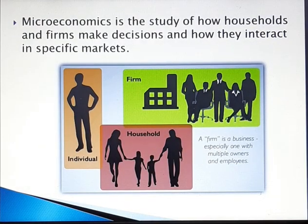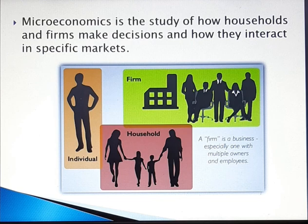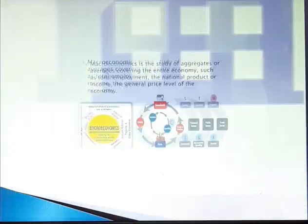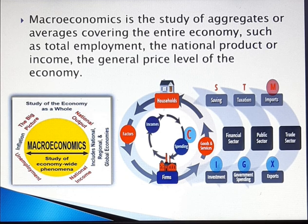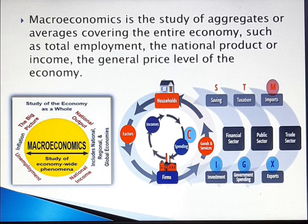Microeconomics is the study of how households and firms make decisions and how they interact in specific markets. It describes the pricing of products and money, causes of different prices to different people, and how individuals best coordinate and cooperate. Whereas macroeconomics is the study of aggregates or averages covering the entire economy, such as total employment, the national product or income, and the general price level of the economy. Therefore, macroeconomics is also known as aggregative economics.